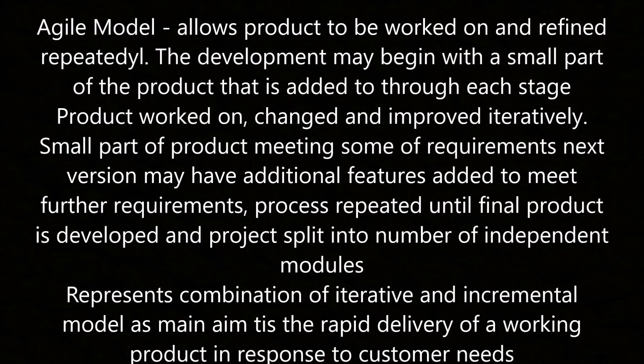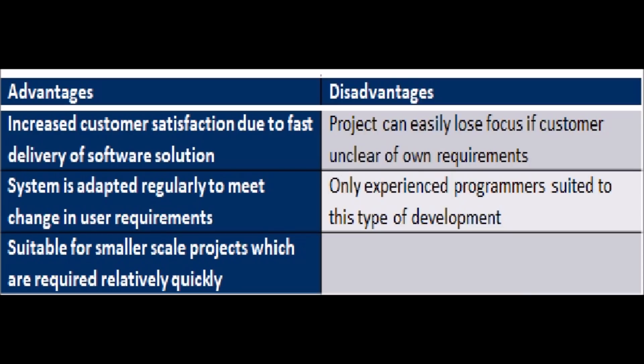The agile model allows a product to be worked on and refined repeatedly. The development team may be given a small part of the product that is added to at each stage. A small part of the product meeting some requirements is built first, and in the next version additional features may be added to meet further requirements. The project is repeated until the final product is developed and is split into a number of independent modules. This represents a combination of iterative and incremental models, with the main aim being to satisfy the rapid delivery of a working product in response to customer needs.